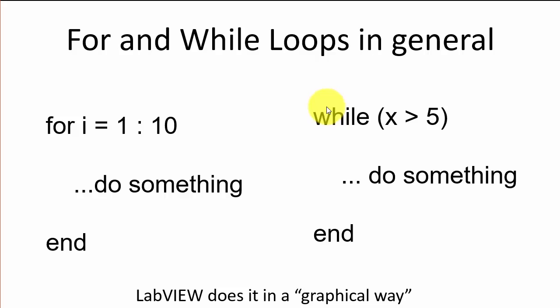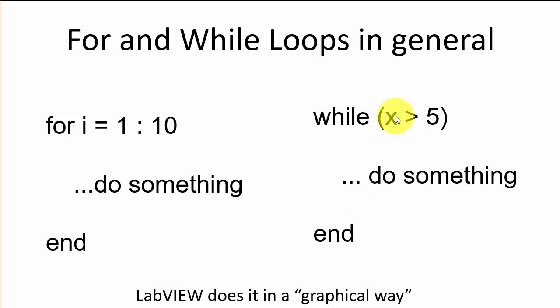Same for while loops. You have typically a condition — it could be above or below some value. While x is above this value, it will go inside the loop. Sooner or later this condition is no longer true and then execution will go outside the loop.